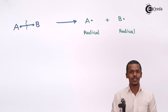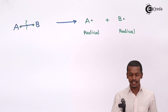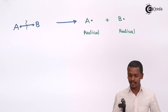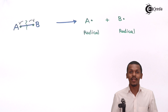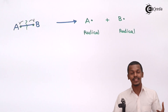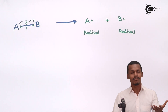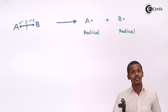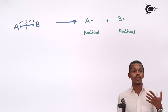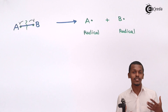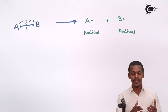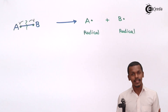To summarize, homolytic fission is the symmetrical division of a bond such that each atom acquires one electron. The representation is very important — we use fish hook arrows to show this. Fish hook arrows indicate that electrons are distributed symmetrically to the respective atoms, and that the product formed is a radical.